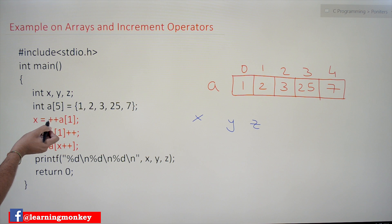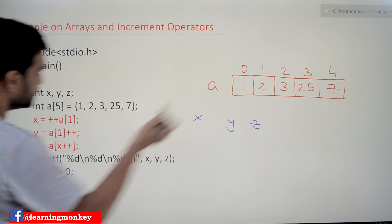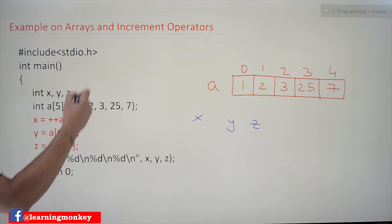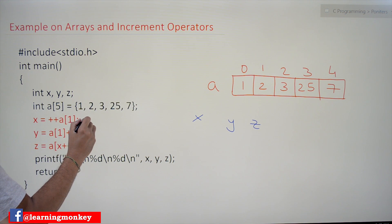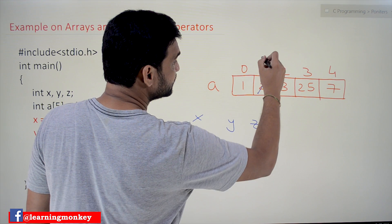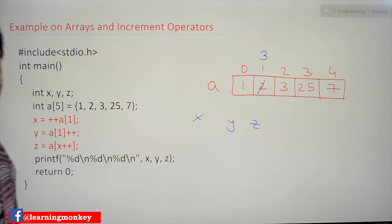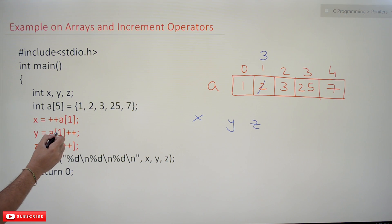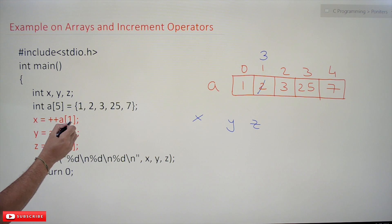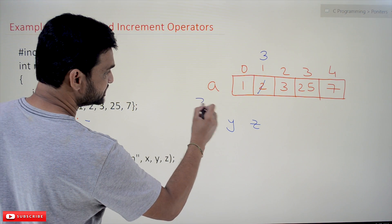So ++a[1]: a[1] is 2. Now the value of 2 will get incremented — a[1] will become 3. After incrementing, that value will get stored in x. So the value of x is equal to 3.